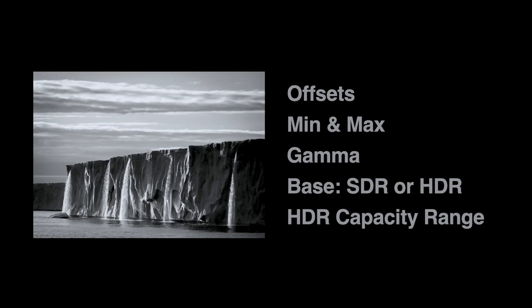There's also a pair of values which define the HDR capacity range. This is what defines how the gain map is going to be interpolated at display time. It's just a handful of scalar values in the metadata.